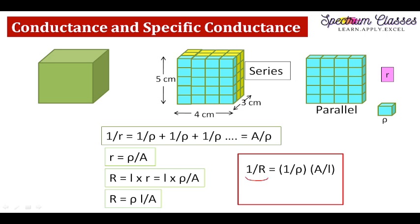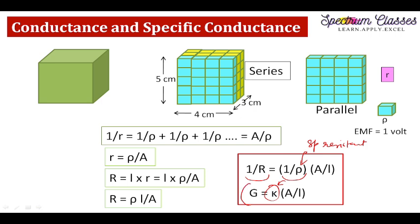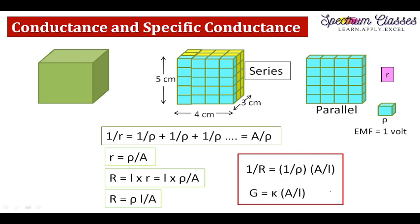So 1/R is called conductance, and since rho is specific resistance, 1/rho gives specific conductance K. While measuring conductance, the observed conductance depends on A/L. When A = 1 cm² and L = 1 cm, the specific conductance equals the conductance exactly. This is very important for researchers, as it relates to measuring the cell constant and conductivity of solutions.